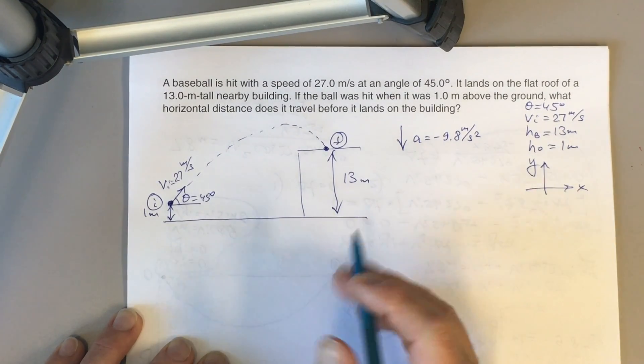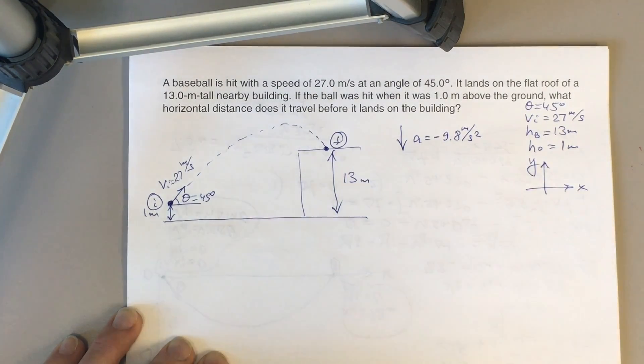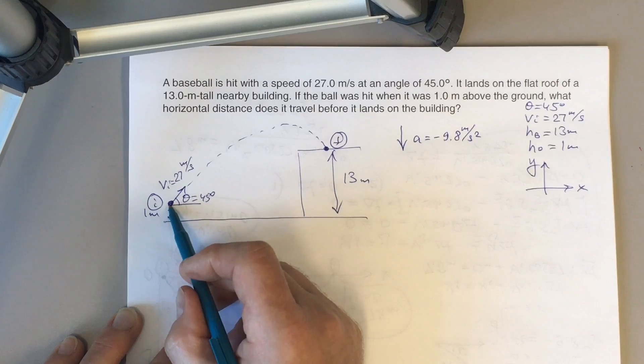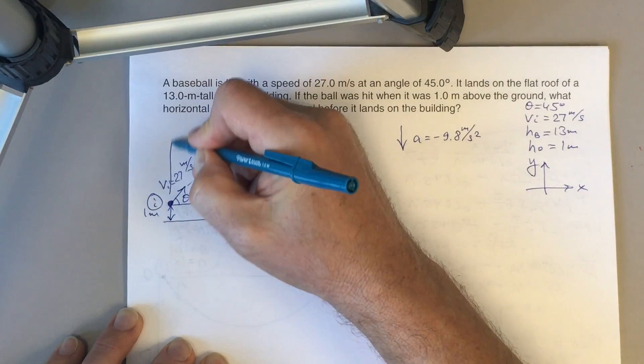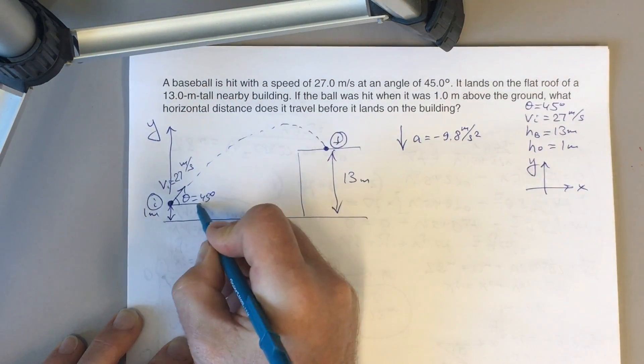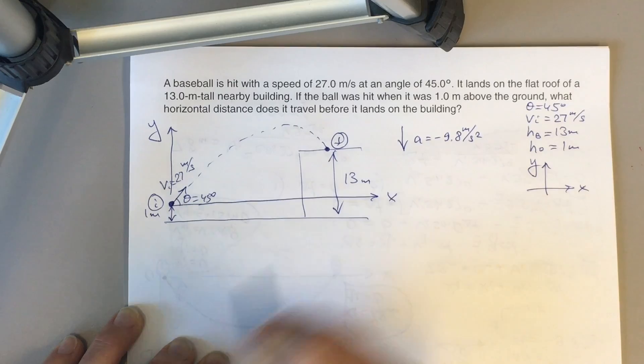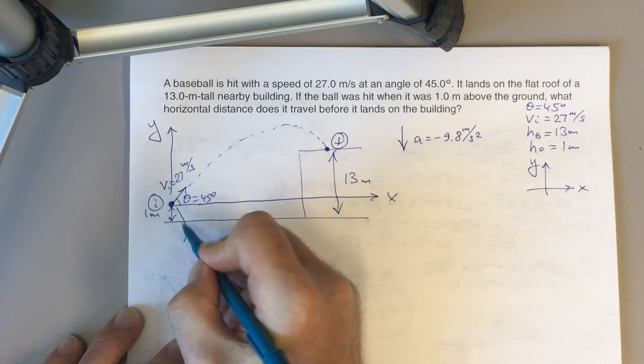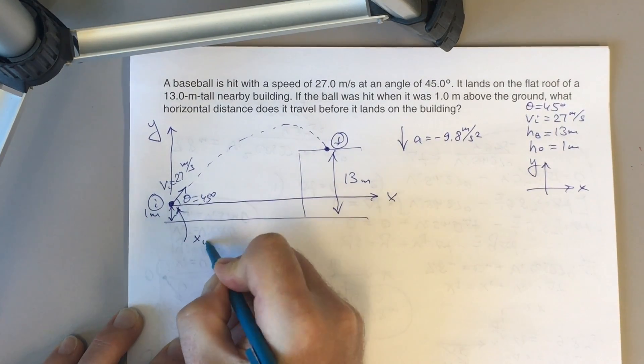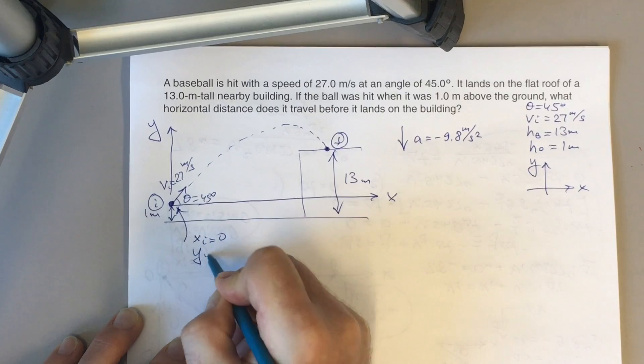Now, we have to put the origin of our coordinate system somewhere, either at the initial or final point. Let's put it at the initial point. So this would be the y-axis, this would be the x-axis. So what do we know about our initial point? We know that x-initial is 0 and y-initial is 0.